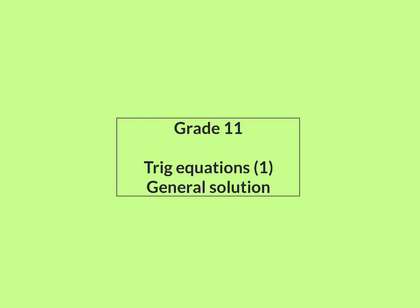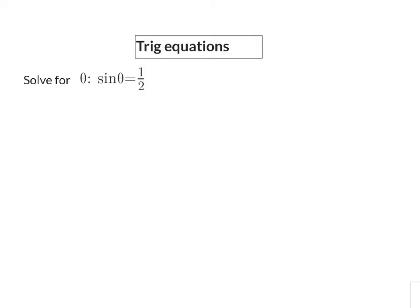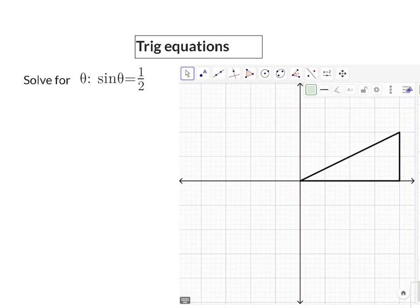In today's lesson we are starting with trig equations and the general solution. To solve any equation means to calculate the value of the variable or unknown to ensure that the left hand side will have the same value as the right hand side. So if we look at our trig equation, we'll have to calculate the value for theta — the size of the angle that will give a sin ratio of a half.